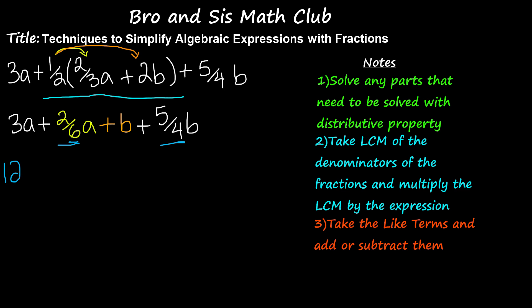So 12 is the LCM of the denominators. I will multiply 12 by the whole expression, which is 3A plus 2 over 6A plus B plus 5 fourths B parentheses.